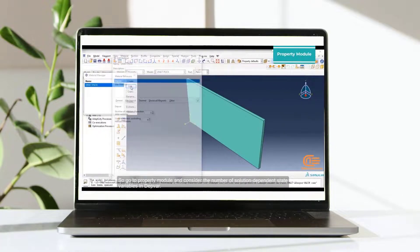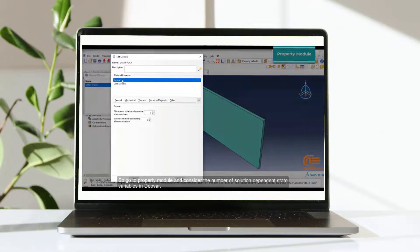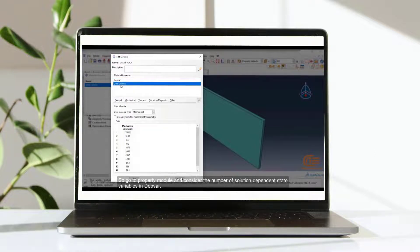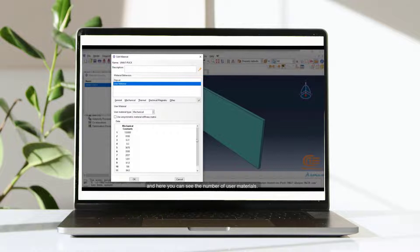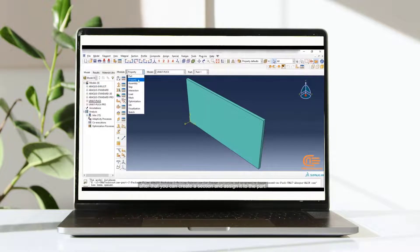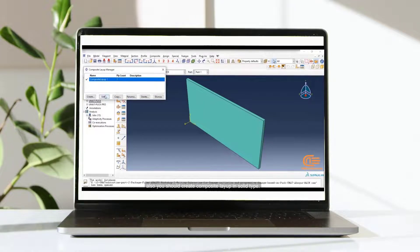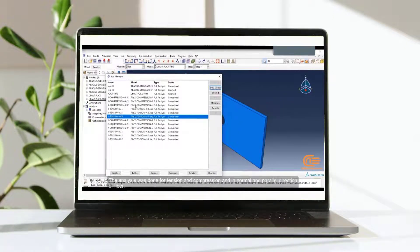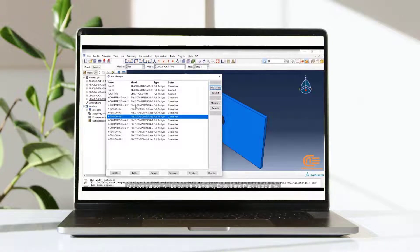So, go to property module and consider the number of solution-dependent state variables in DEPVAR. And here you can see the number of user materials. After that, you can create a section and assign it to the part. Also, you should create composite layup in solid type. The analysis was done for tension and compression and in normal and parallel direction of fiber. And compression will be done in standard, explicit and Puck subroutine.